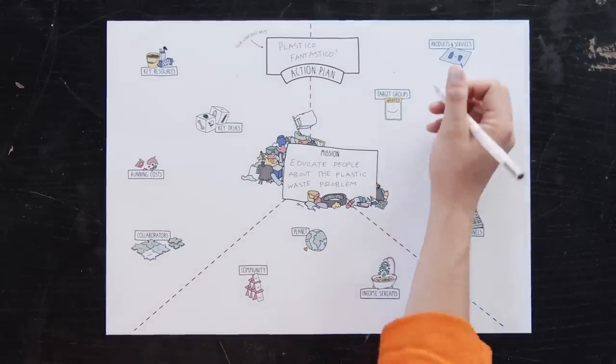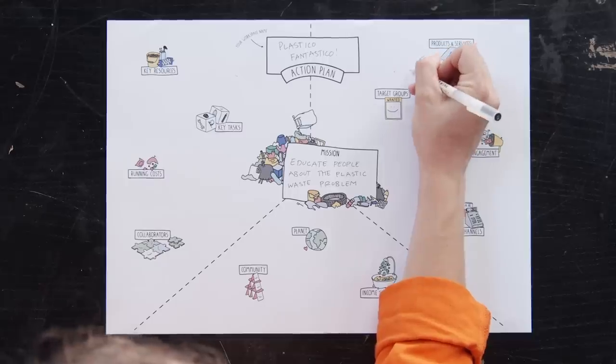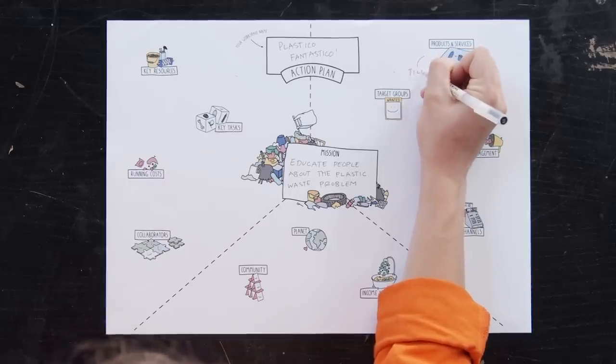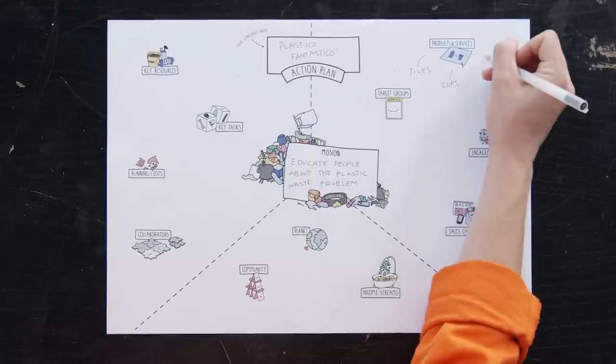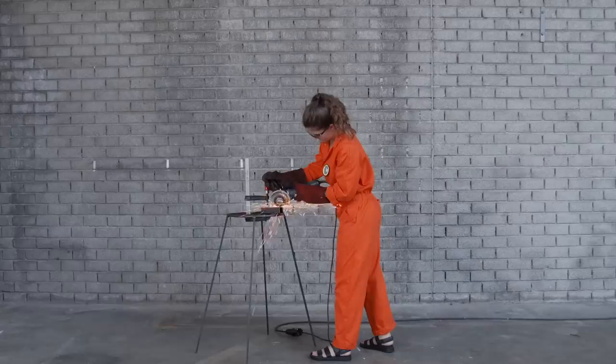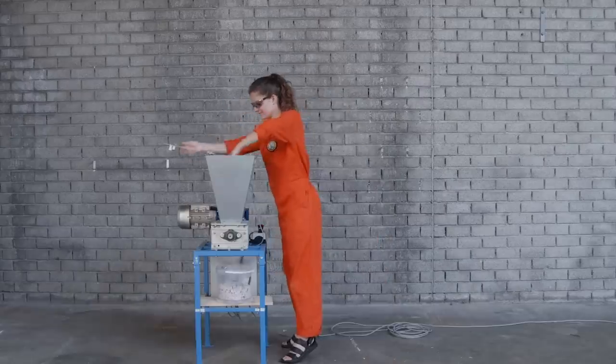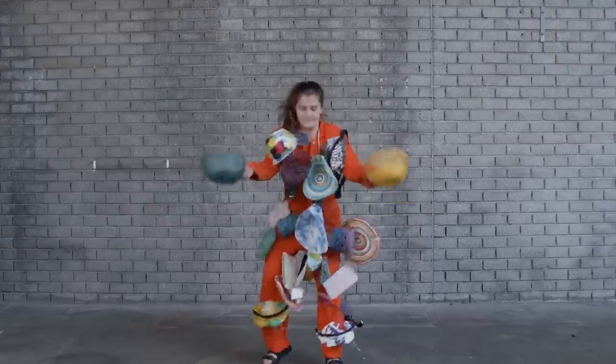Okay, now that we know our mission, you can move to the right section of the action plan, which is where we will define the sections of how you'll interact with your customers. First, think about what products and services you want to offer. Are you focused on workshops, building machines, collecting and shredding plastic, or products? What kind of products?